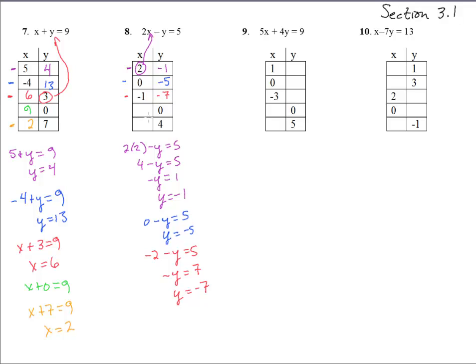Good. If we stick in 0 for y here. Now again, we're sticking in for y, not for x this time. So we have 2x equals 5. That gives us x equals 5 halves. And then the last one.